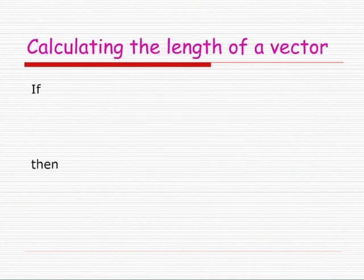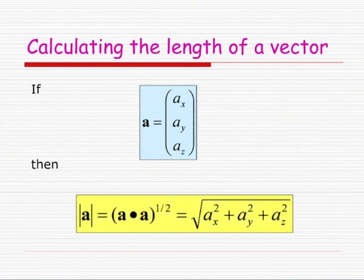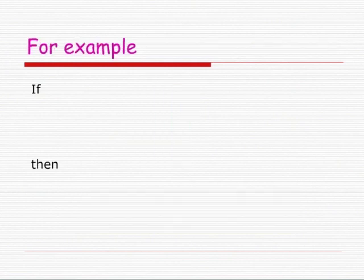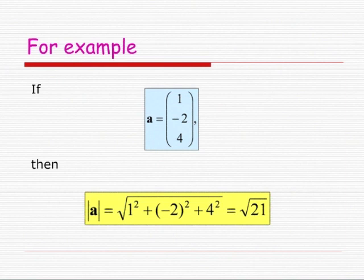To calculate the length of a vector A given in component form (AX, AY, AZ), we use Pythagoras' theorem: the length of A equals the square root of AX² + AY² + AZ². For example, if A is (1, −2, 4), then the length of A is the square root of 1² + (−2)² + 4², which is the square root of 21.